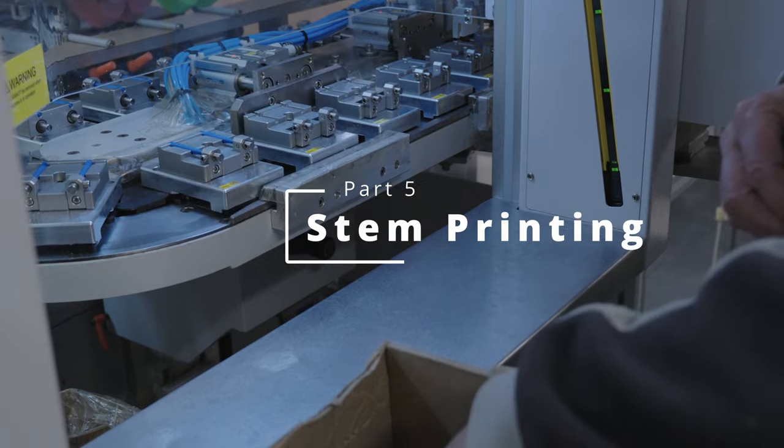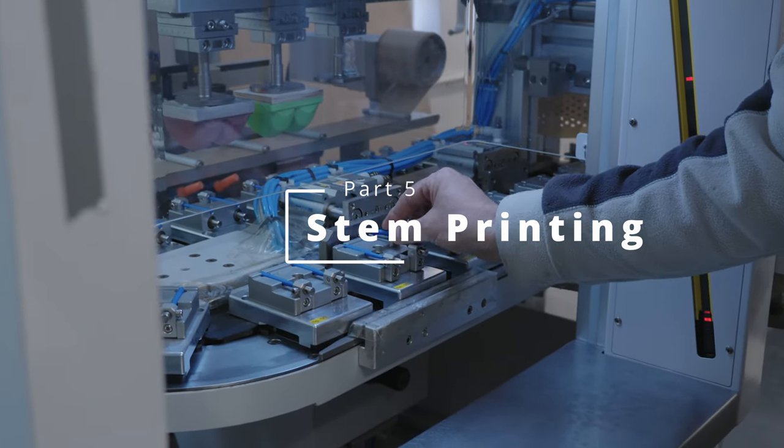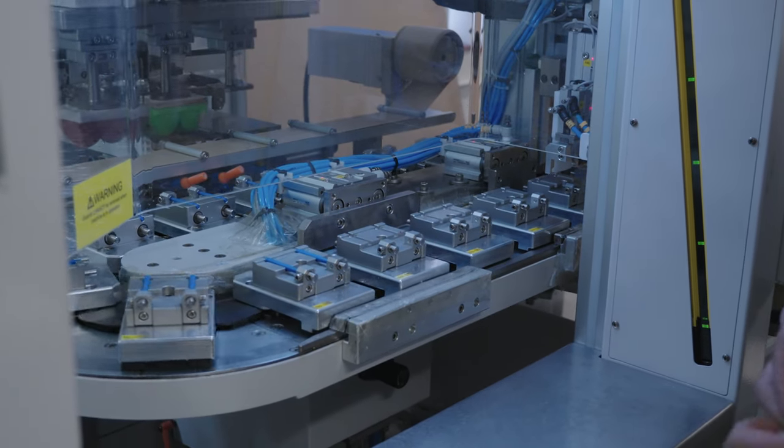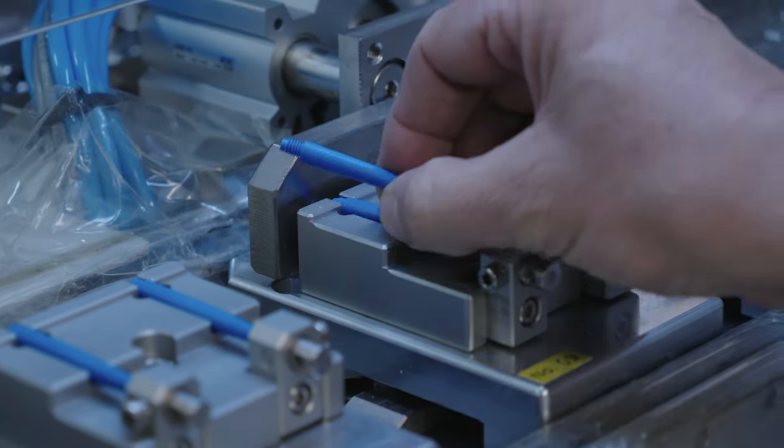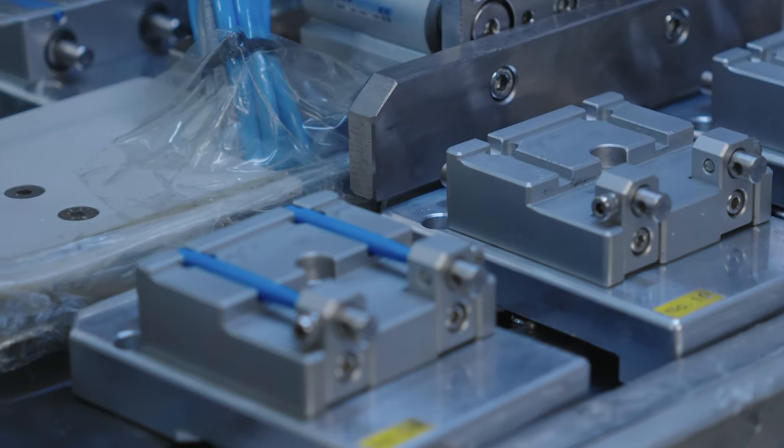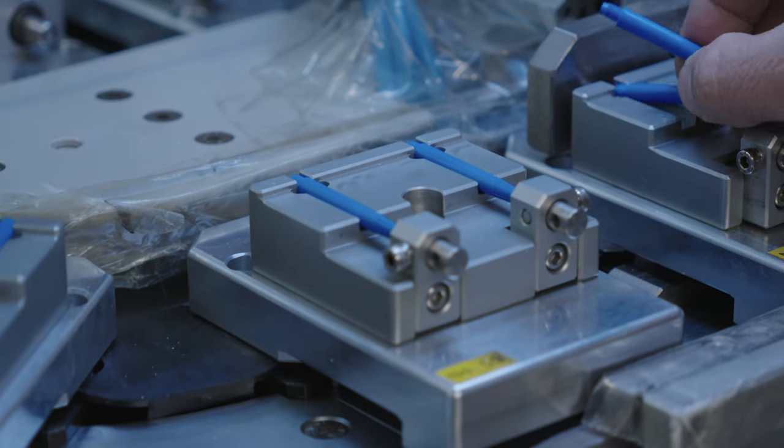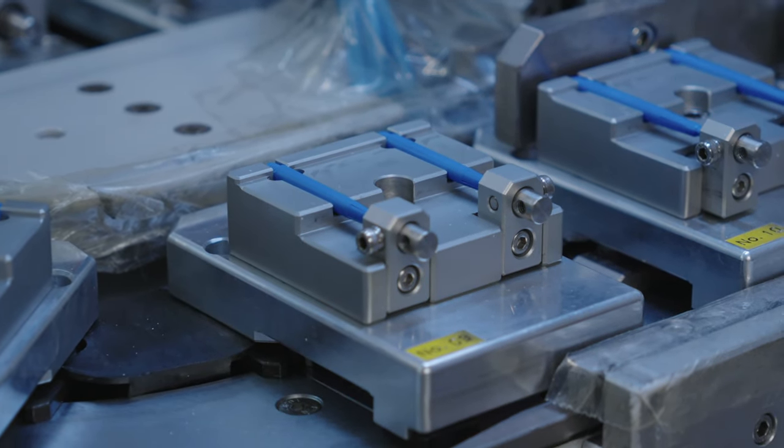Part 5: Stem Printing. This conveyor belt allows for two stems at a time to be sat, perfectly aligned, ready for printing. These are manually added and as it rotates around, you'll see the print on the other side.